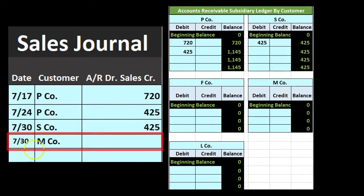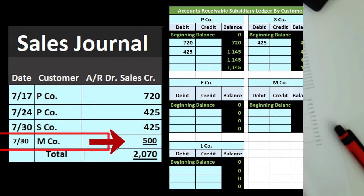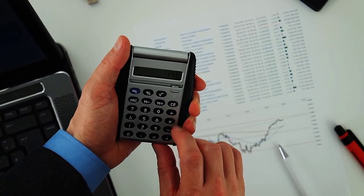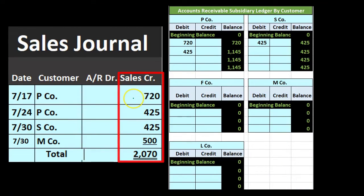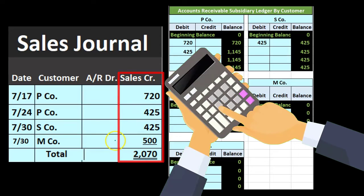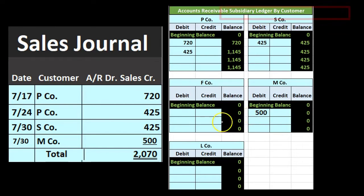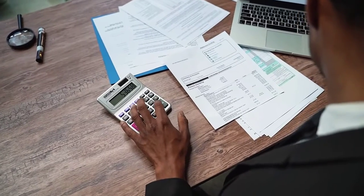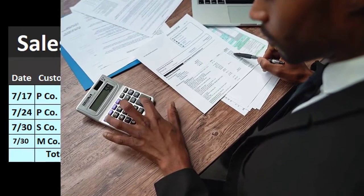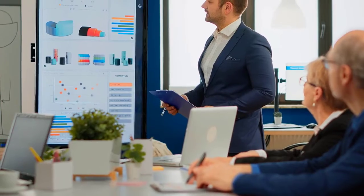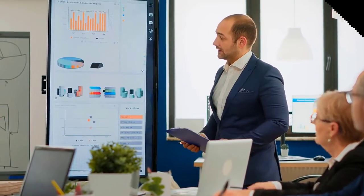Next, on 7/30, M company made a sale for 500. Then we just sum this up. All the same type of transactions: if we sum up the entire sales journal, 720 plus 425 plus 425 plus 500 gives us 2,070. We also record the 500 to M company in the subsidiary ledger, not to the general ledger. Note that this sales journal can be very long depending on the type of company — we just have a few transactions here to demonstrate the process, but this saves a lot of time when there are many sales.